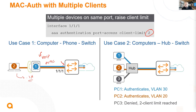On one interface with both dot1x and MAC authentication applied, when the phone connects, dot1x fails first since the phone has no supplicant. The switch waits the default 60-second timer, then tries MAC authentication. In ClearPass you'll see two entries for the phone - one failed dot1x and one successful MAC - and one entry for the PC showing dot1x authentication success.